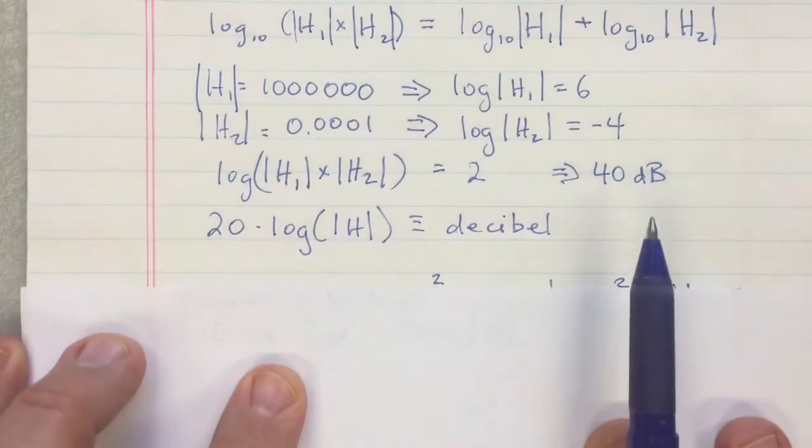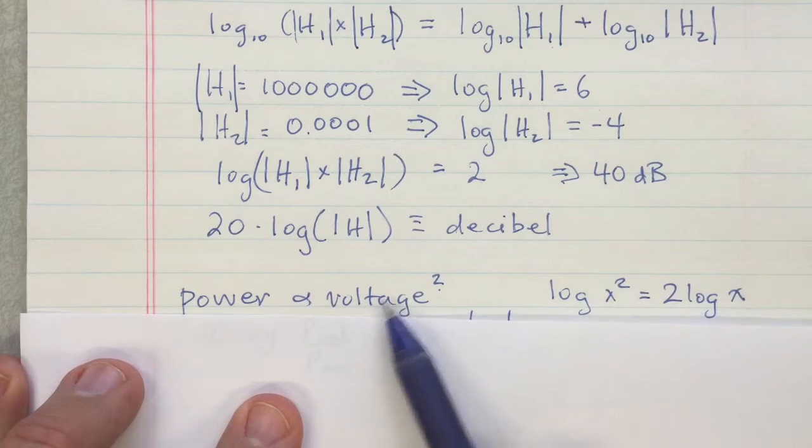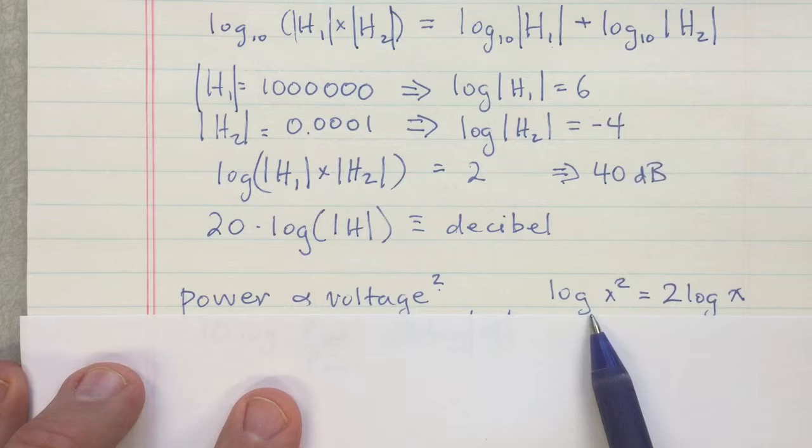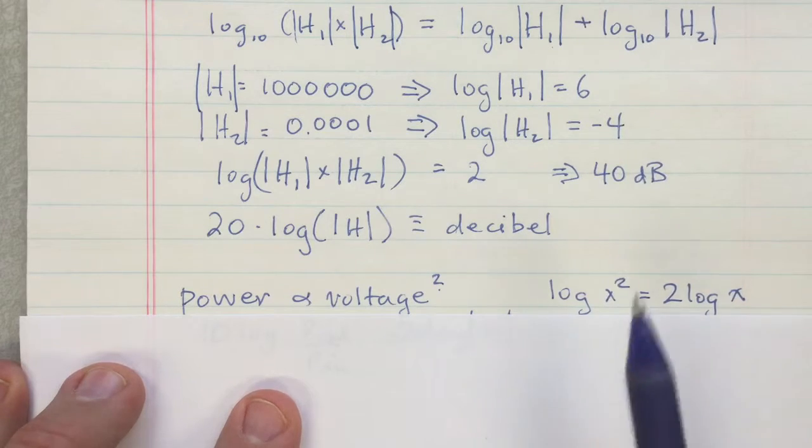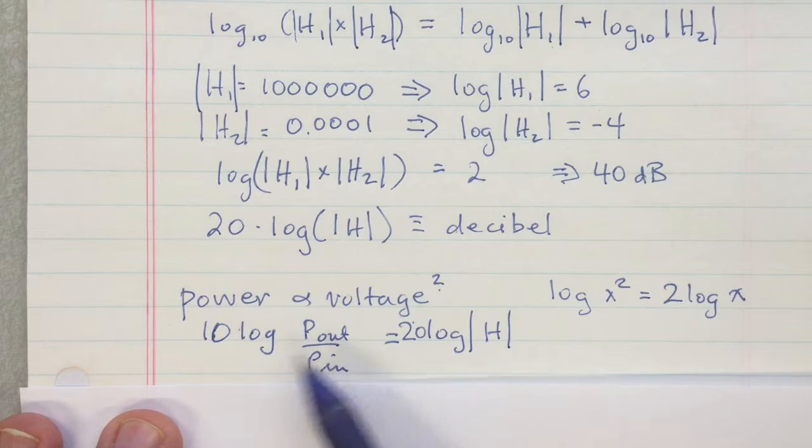Now you can actually talk about power ratios if you want to instead, because power is the voltage squared, and when you take the logarithm of a square, you just get two times the logarithm of the value, so the coefficient for the power ratio is just ten.